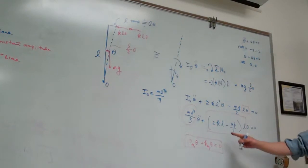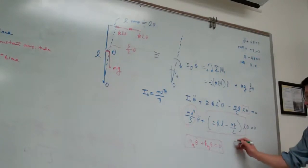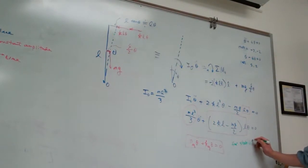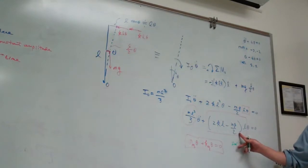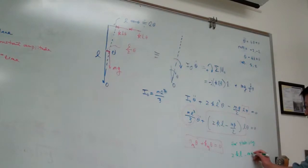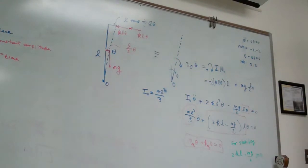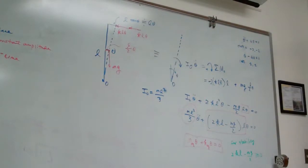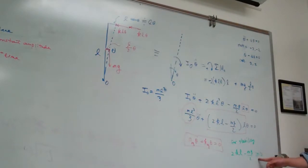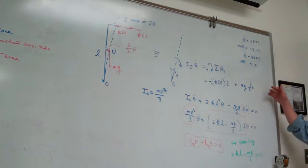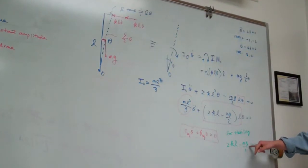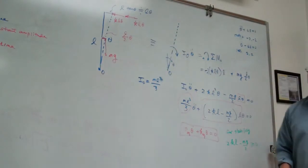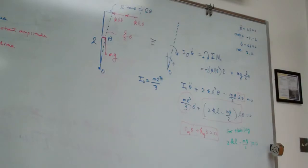Right now, for this one, for our example here, asking for a stable system, what is the requirement of this term? Must be positive, right? So that means 2KL minus mg must be greater than zero. That really depends on selecting K and L depending on mg to make that happen. So that is a simple example for demonstrating stability.